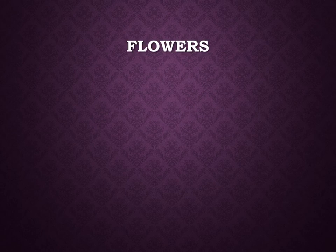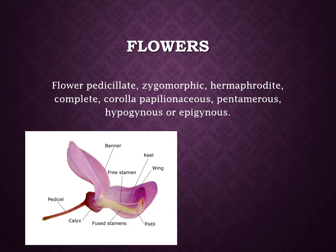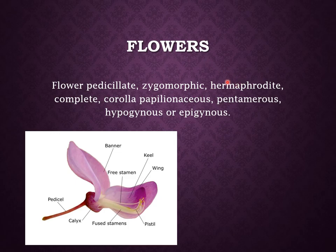The flowers are often bracteate as well as bracteolate. They are pedicellate flowers having stalked flowers. Flowers show zygomorphic or irregular symmetry — when a flower is cut, it is not divided equally from more than two planes. Hermaphrodite means they are bisexual; both the sexual organs, that is the androecium and the gynoecium, are present in the same flower. So the flowers are complete.